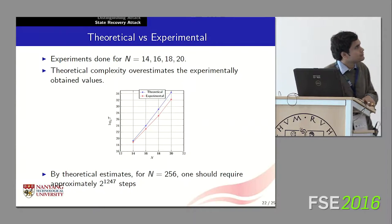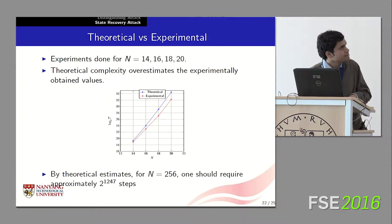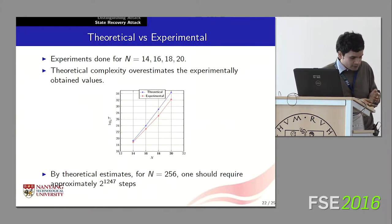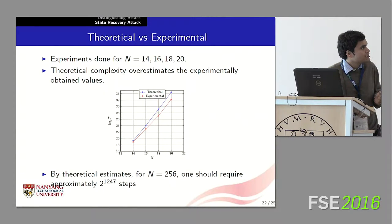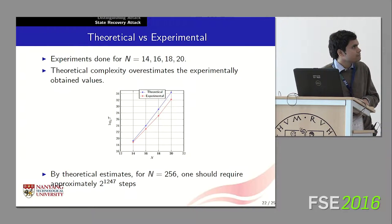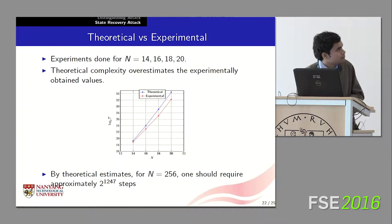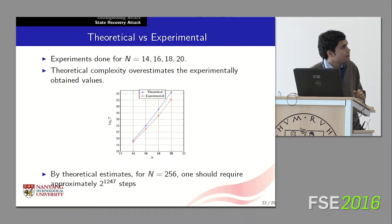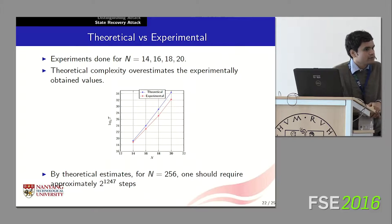We performed this guess-and-determine experiment on smaller values of N. In the paper, we outline a method to theoretically estimate the number of guess-and-determine steps required. We plotted theoretical upper bounds and experimentally obtained average step counts for N between 14 and 20; the theoretical bound was consistently larger than the experimental one. Extrapolating our theoretical estimates to N equal to 256, we find that the full guess-and-determine attack requires around 2¹²⁴⁷ steps for the full version of Spritz.